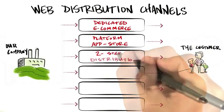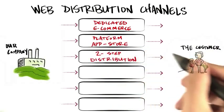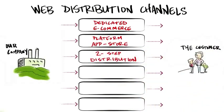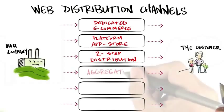Another choice is to use two-step distribution. That is, there might be other distributors who have major web presences — Amazon, Walmart, other local and regional stores — and you might actually sell your virtual or physical products through theirs.